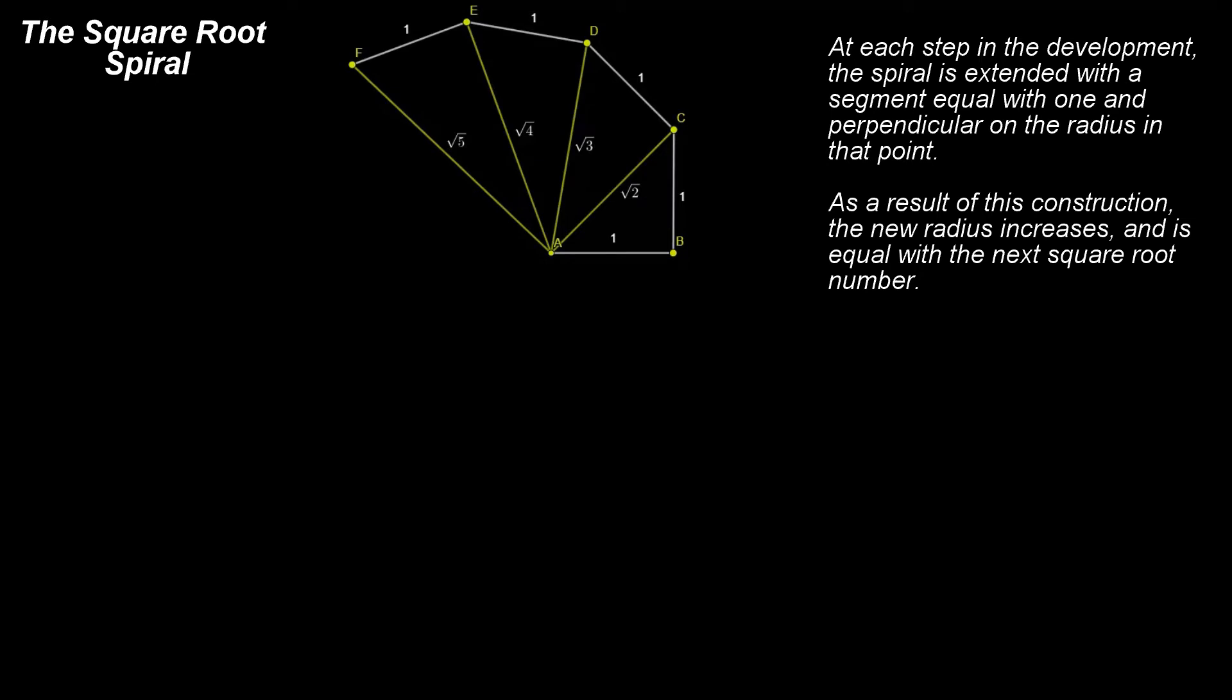At each step in the development, the spiral is extended with a segment equal with 1, perpendicular on the radius in that point. As a result of this construction, the new radius increases and is equal with the next square root number.